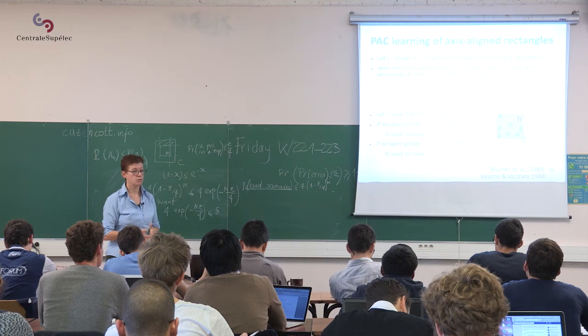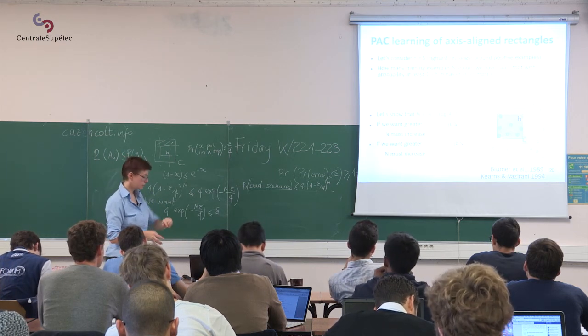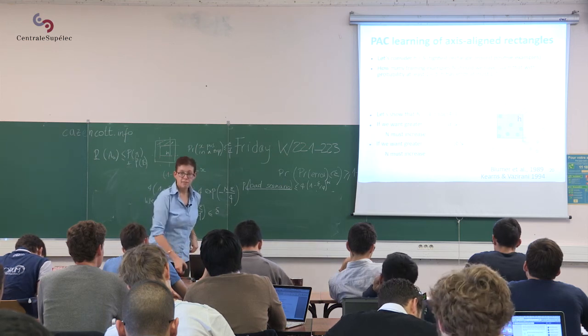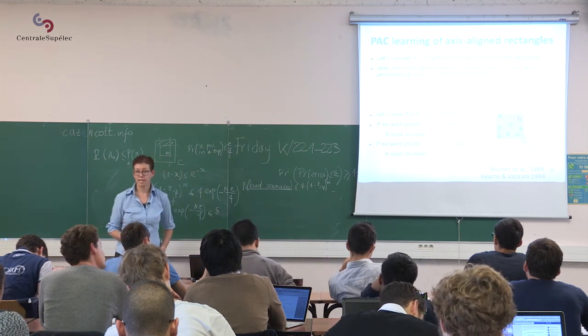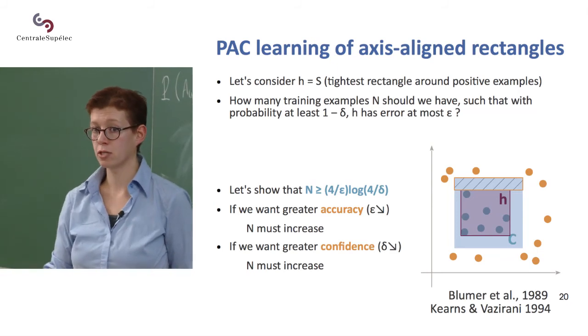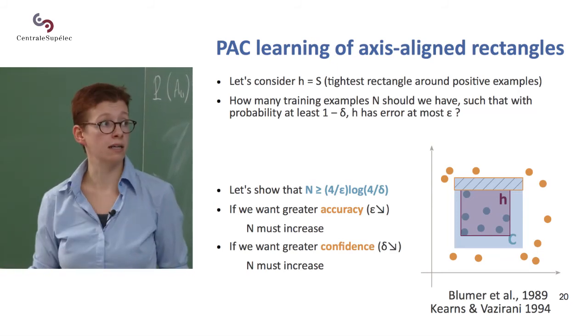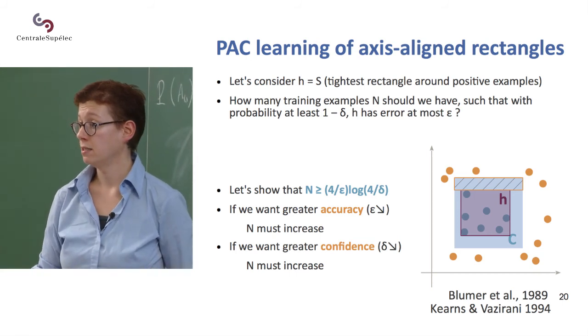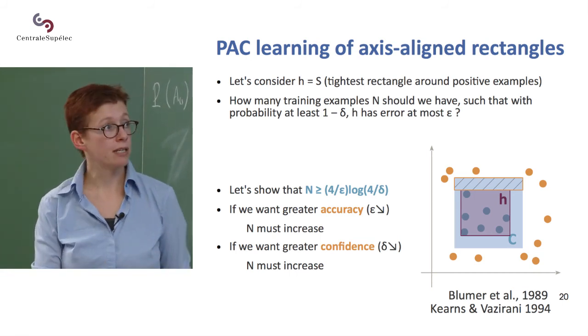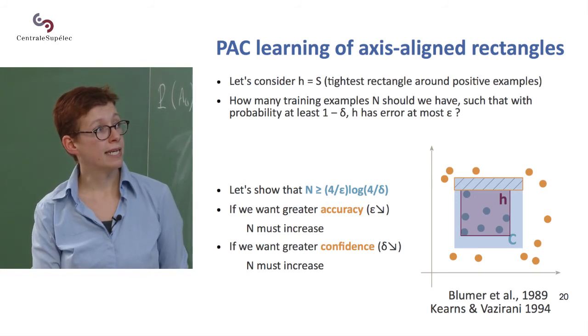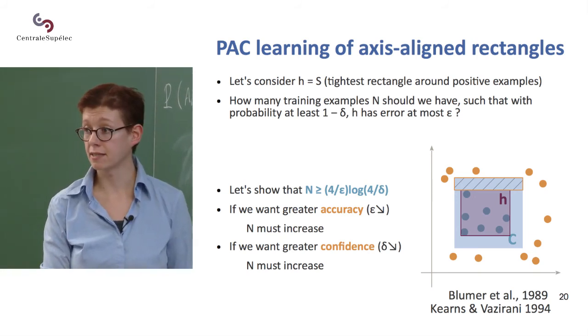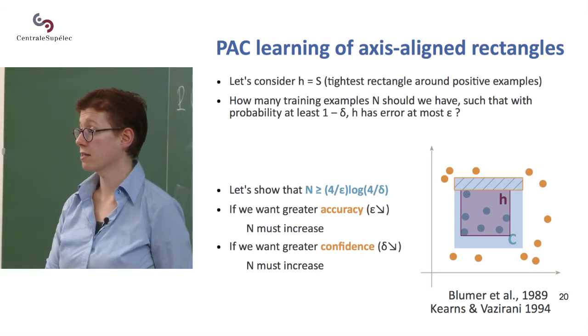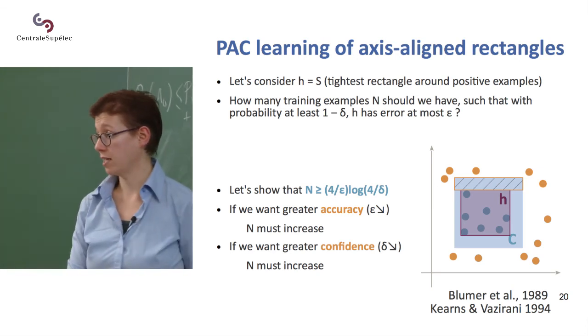It's not very tight because we've made a number of simplifications, but if n is greater than 4 over epsilon log of 4 over delta, then I can guarantee that in more than 1 minus delta of the cases, the error is bounded by epsilon. So there's two interesting things to note about this. The first one is that if I want to increase my accuracy, so I want to make mistakes very rarely, it means that I need to lower epsilon. If I lower epsilon, then 4 over epsilon increases, and the lower bound for n increases, so I need more training examples.